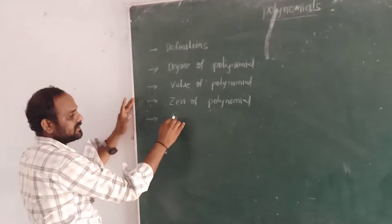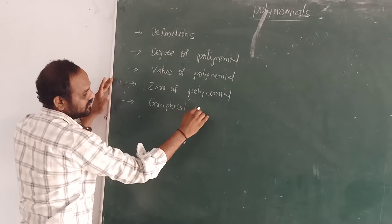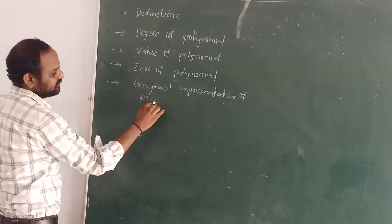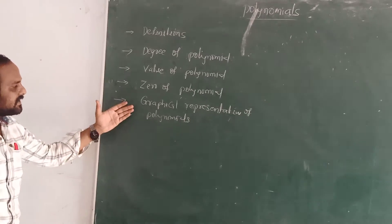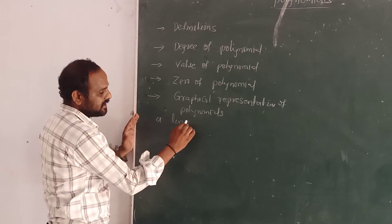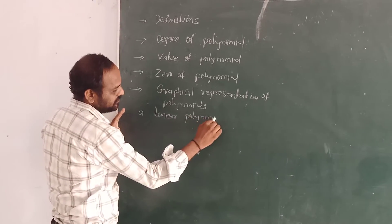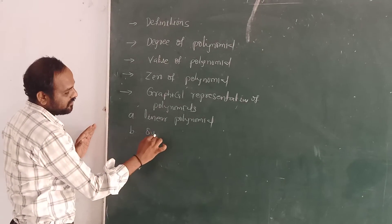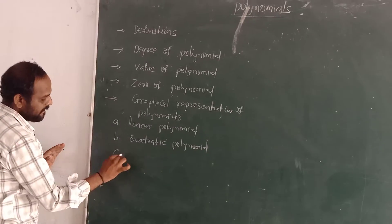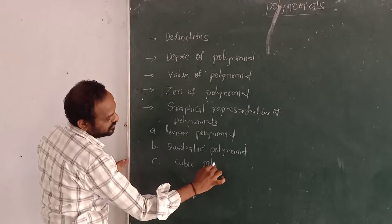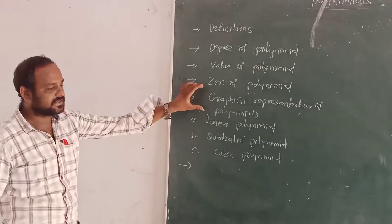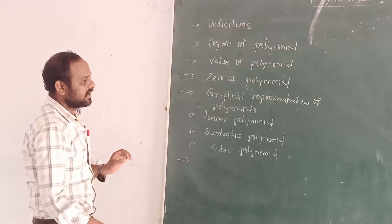The next concept is graphical representation of polynomials. In graphical representation of polynomials, we have sub-concepts: the first is linear polynomial, the second is quadratic polynomial, and the third is cubic polynomial. These are the three sub-concepts in graphical representation of a polynomial.